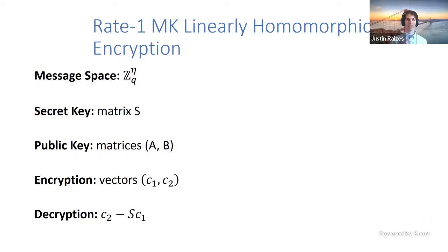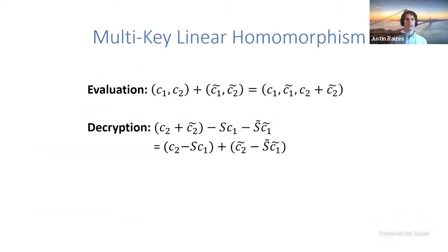Our starting point is Regev's encryption scheme, modified to pack many messages into a single ciphertext. The messages are represented as a vector; the secret key is a matrix S; the ciphertext has two components c1 and c2; and decryption is linear: take the second ciphertext component minus S times the first ciphertext component.